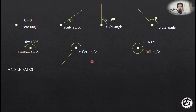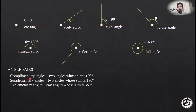Complementary angles are two angles whose sum is 90°. Supplementary angles are two angles whose sum is 180°. Explementary angles are two angles whose sum is 360°.